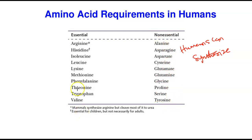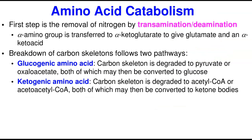There are a few notes: a star mark indicates that mammals can synthesize that amino acid, but most of them are used in the urea cycle. Histidine is essential only to children — they cannot synthesize it — but in adults it is not essential because adults can actually synthesize it. These are the key requirements you need to know about amino acid requirements in humans.